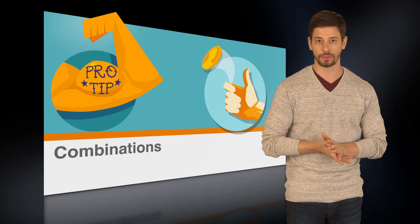Let's take a look at an example. On an exam, students must select one short answer question and one essay question to complete. If the exam has five short answer and three essay questions, how many distinct combinations of questions can students select? A is 2, B is 7, C is 8, D is 15, and E is 45.